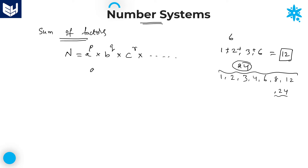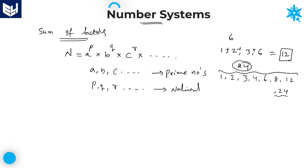Here, the base values a, b, c are all prime numbers. Whenever we write the given number in terms of prime factors, all base values must be prime numbers. The power values p, q, r, and so on are all natural numbers. So the first step is writing the given number in terms of prime factors.